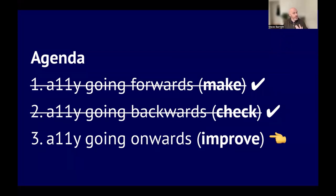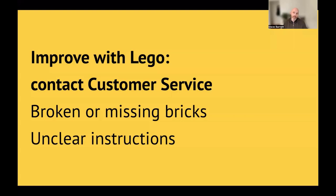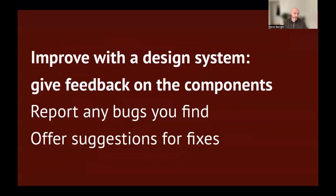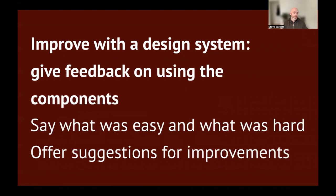Chapter three: Accessibility going onwards — Improve. Improving with Lego is like contacting customer service: were there broken or missing bricks, or were the instructions a bit unclear? Improving with a design system could mean giving feedback on the components — reporting any bugs we find, and if we can, offering suggestions for the fixes too. Another thing we can do is give feedback on using the components: say what was easy or hard about combining things, like not being able to find how to add an accessible name to a group of radios. Offering suggestions for improvements can be very useful and can speed things up, making it feel more like a community effort.